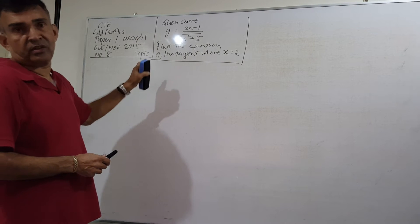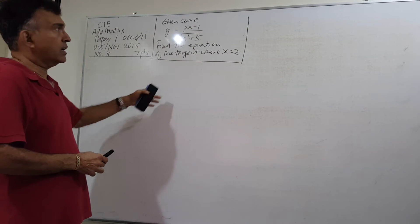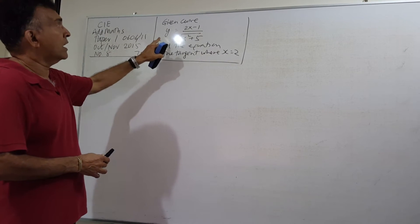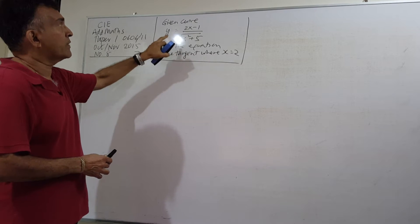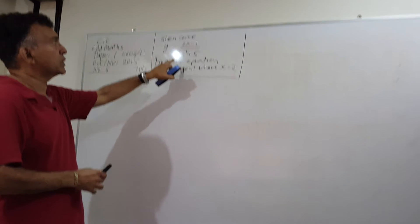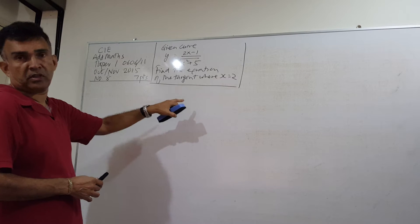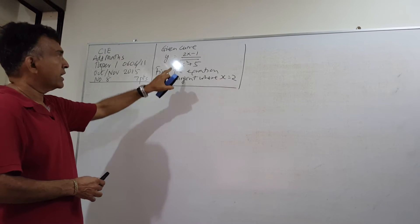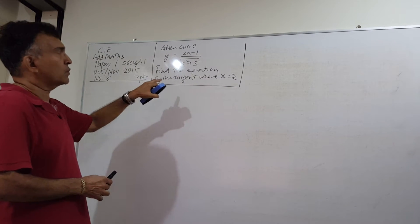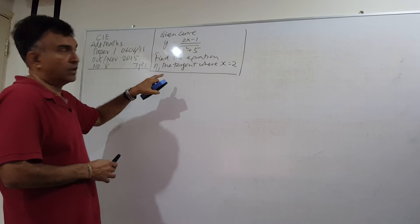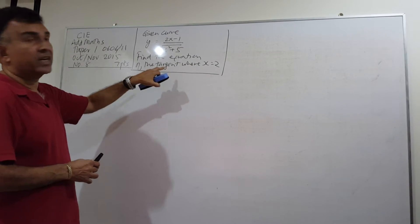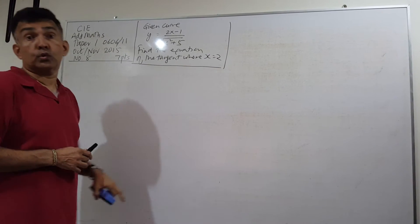I have paraphrased the question on the board — you can look up the original question on your own. You're given the curve y equals (2x minus 1) over the square root of (x squared plus 5), and you're asked to find the equation of the tangent on the curve where x equals 2.